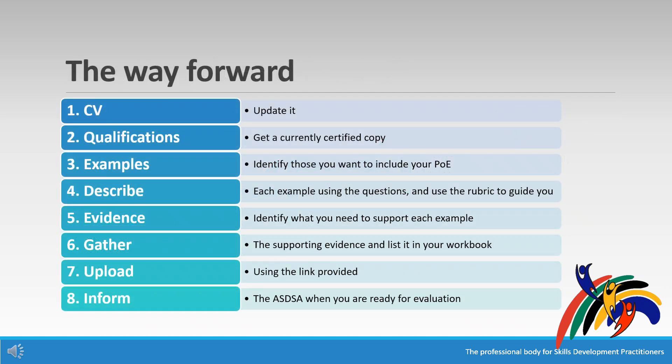Simply put, this is an eight-step process. Step one: get your CV together and do any updates needed. Step two: get a currently certified copy of whichever qualification meets the designation requirements. Step three: plan by identifying examples of your workplace competence to include in your portfolio. Step four: describe each example in turn using the guideline questions and the rubric. Step five: identify the evidence you need for each example.